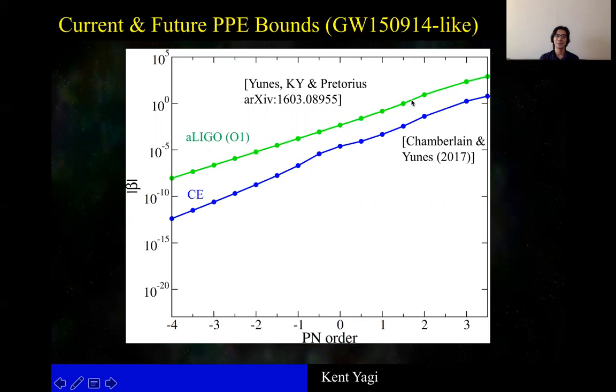Even more interesting is that if we have LISA detecting this kind of event, then the improvement is significant in terms of constraining this beta, especially in the lower post-Einsteinian correction.